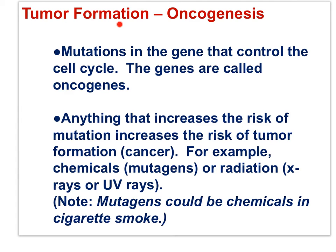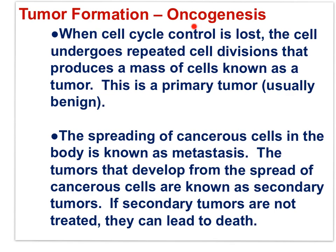Oncogenesis is defined as mutations in the genes that control the cell cycle — genes called oncogenes. Anything that increases the risk of mutation increases the risk of tumor formation, for example mutagenic chemicals or radiation. When cell cycle control is lost, the cell undergoes repeated divisions producing a mass known as a tumor — a primary tumor, usually benign. The spreading of cancerous cells in the body is known as metastasis, and the tumors that develop from this spread are known as secondary tumors.